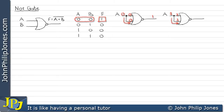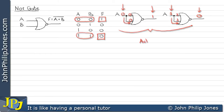If I now put a one here, we can see we have a one at both inputs, which gives us a zero at the output. Consequently, when we have a zero we get a one, and when we have a one we get a zero. We can quite simply see that this acts like a NOT gate.